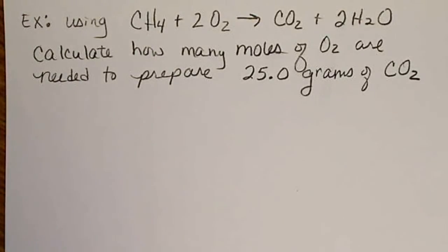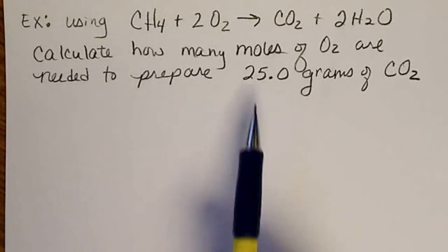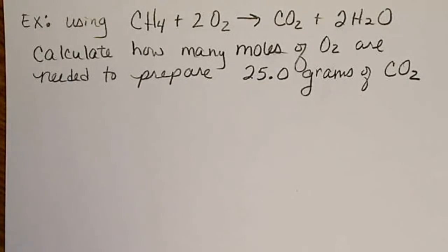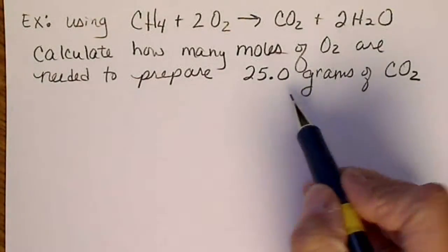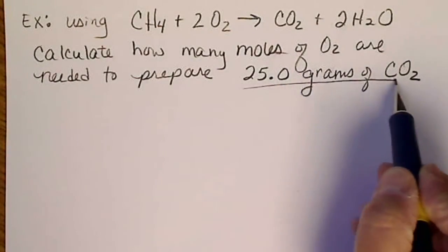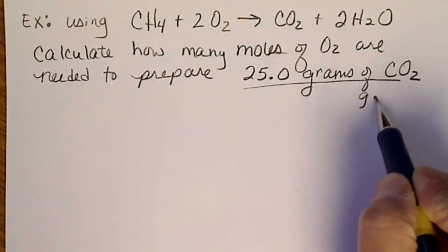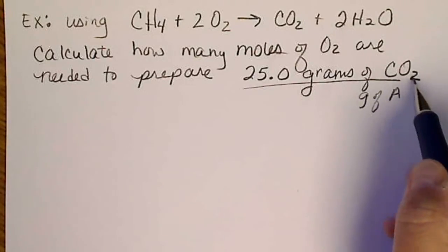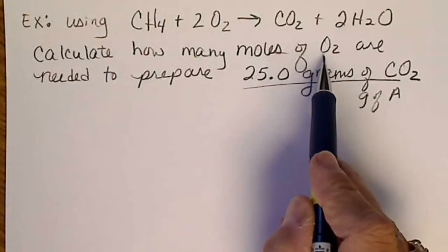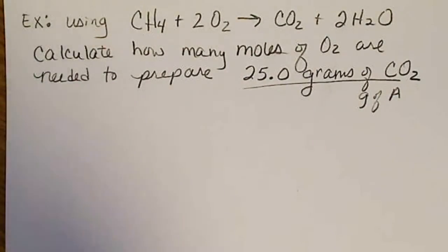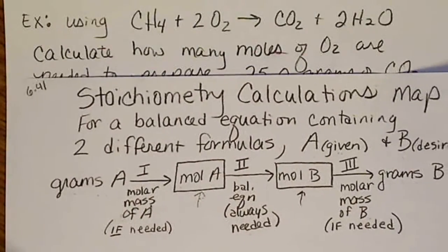Using the stoichiometry calculations map, we're going to calculate how many moles of oxygen are needed to prepare 25 grams of CO2. So if we look at what we're given, we're given grams of A and we're asked for moles of B. So if we look at the map that we're going to use,